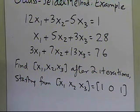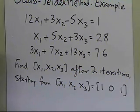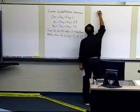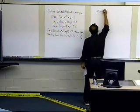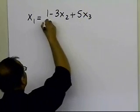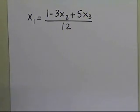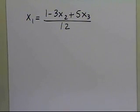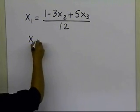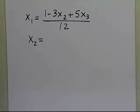Let's start with this initial guess and apply the Gauss-Seidel method to solve this example for two iterations. The first thing we have to do is rewrite each equation. The first equation is rewritten as x1, the second equation for x2, and the third equation for x3 — this makes algorithmic sense.